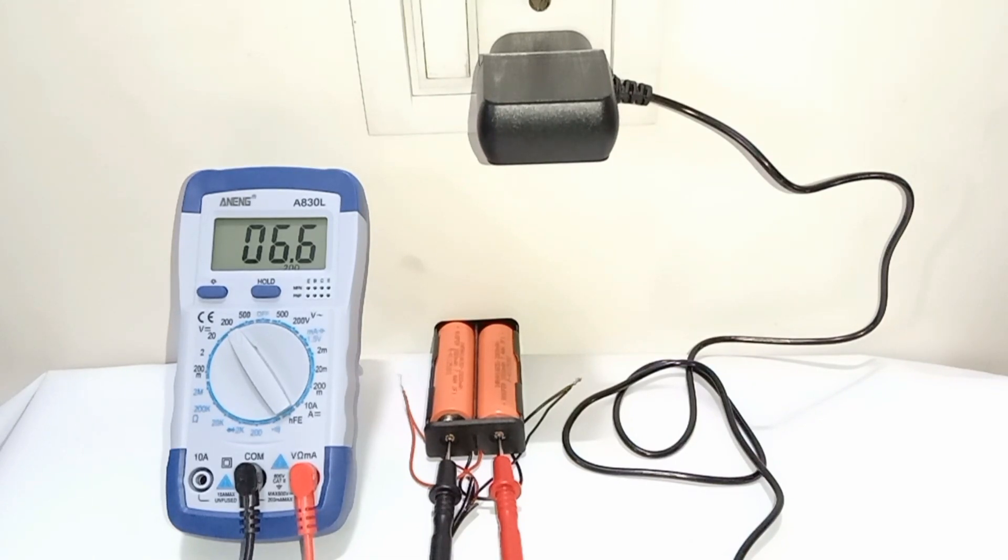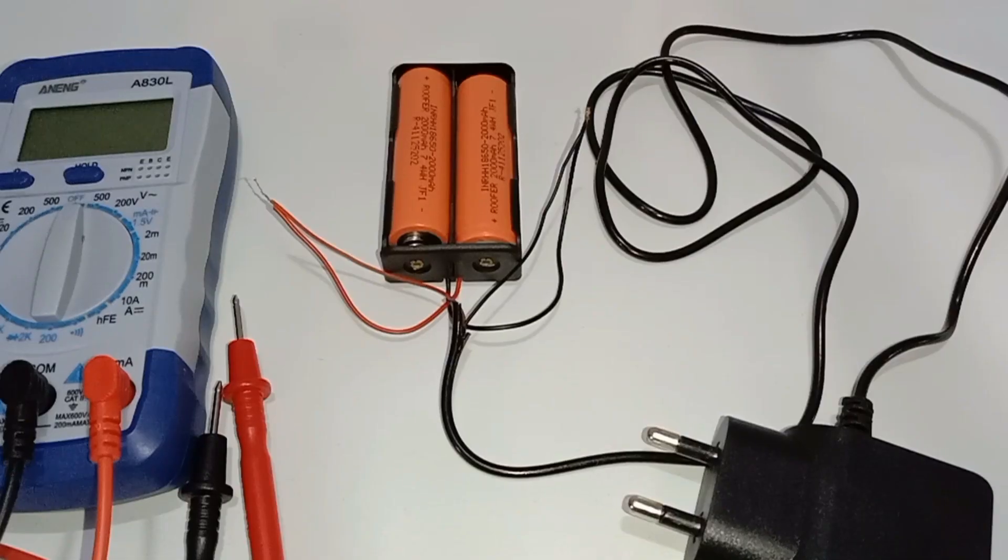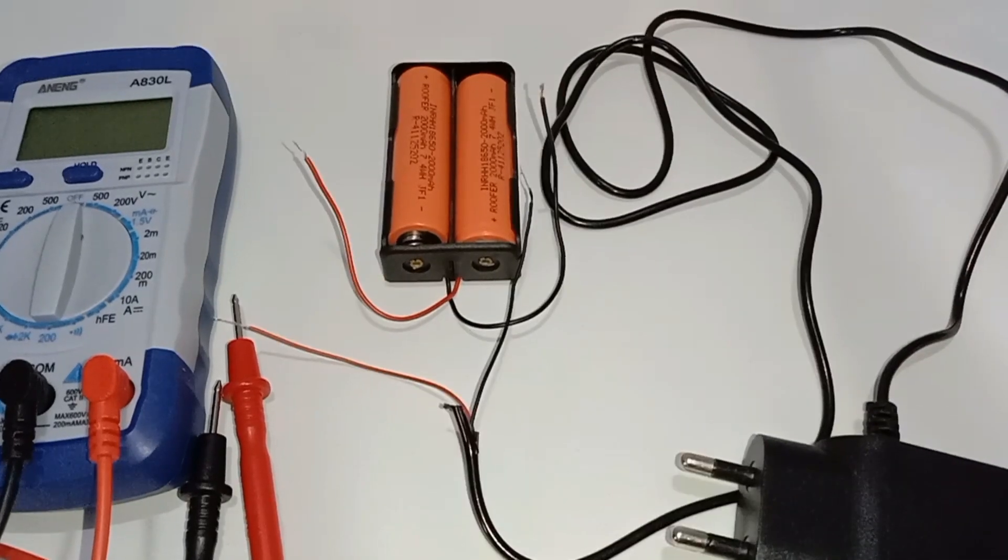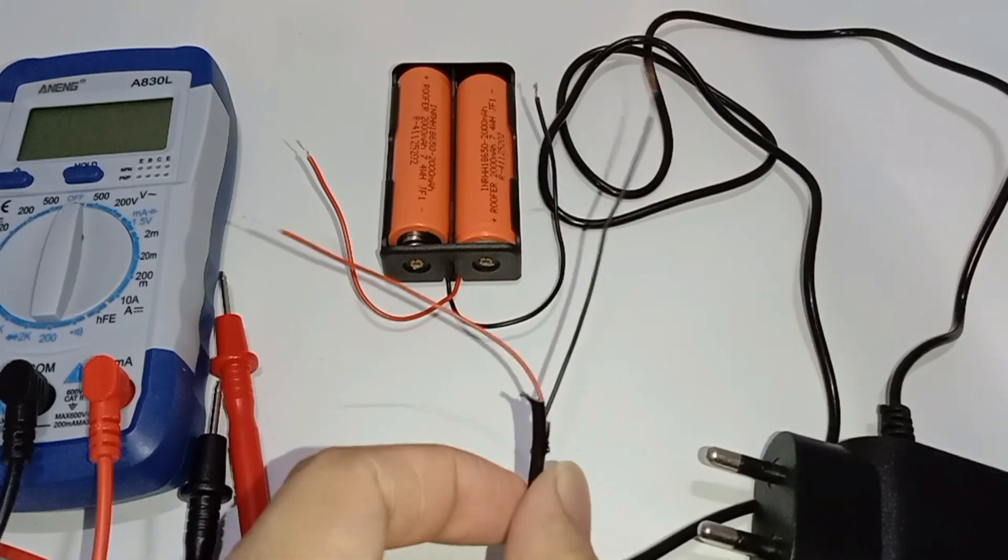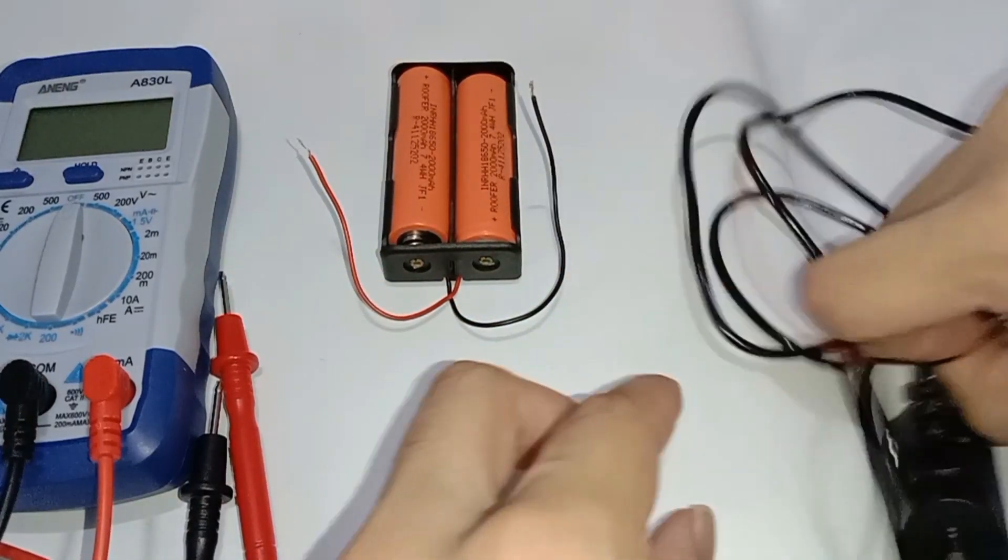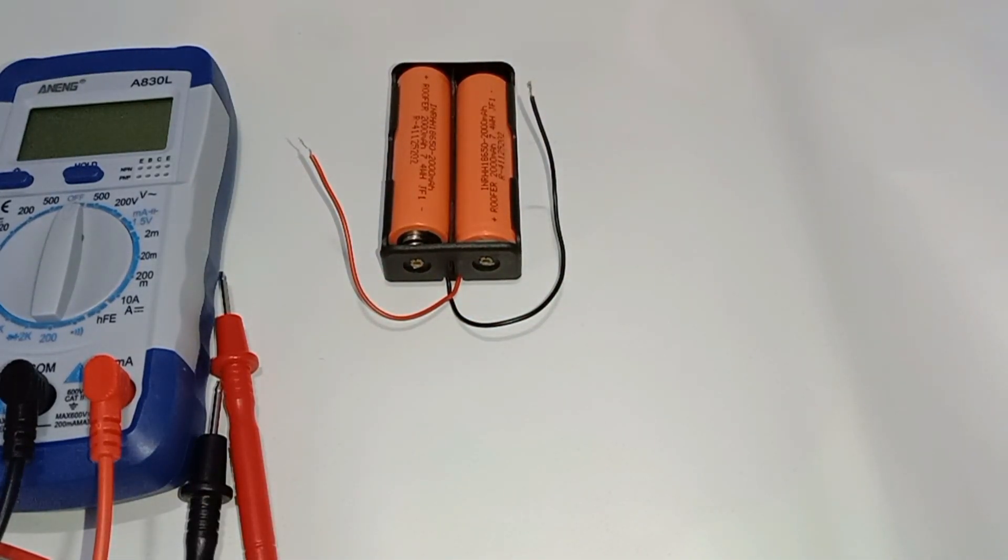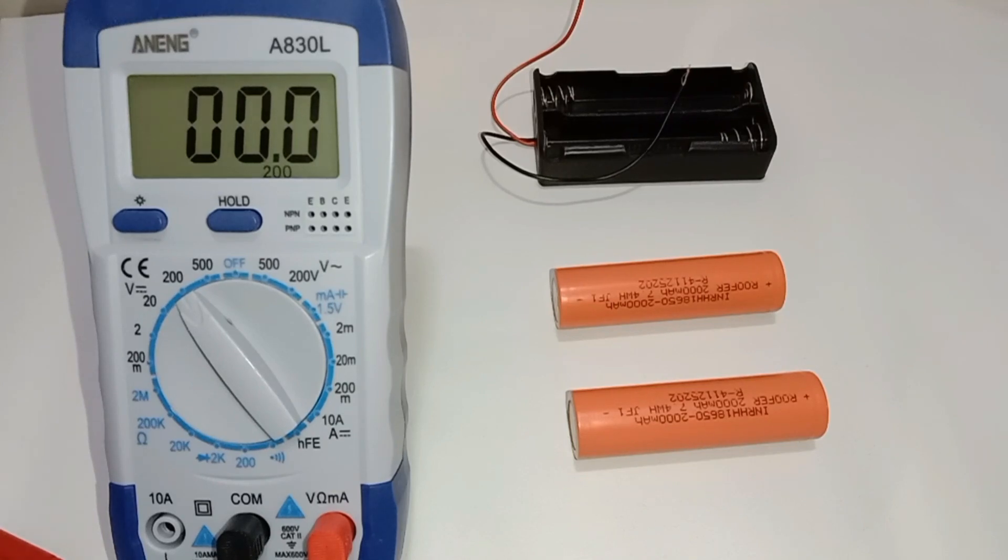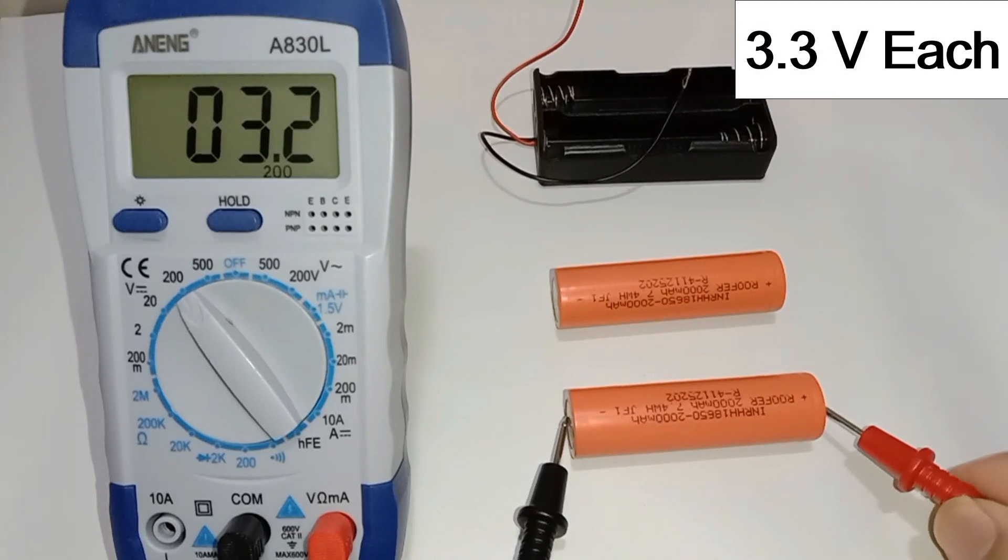See, it will stop around 6.6V. Check each cell individually. It gives us 3.3V approximately.